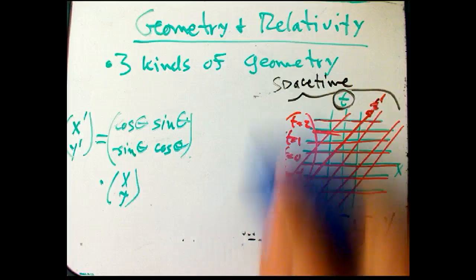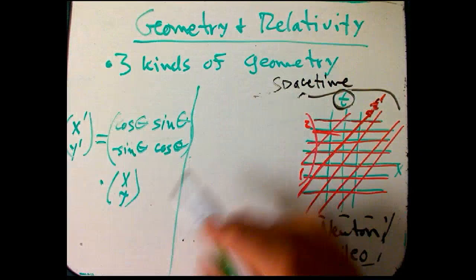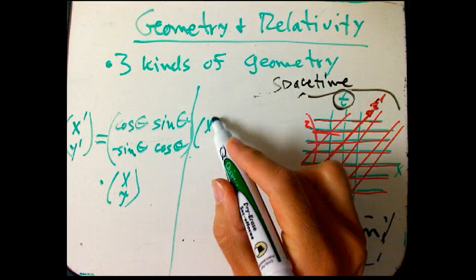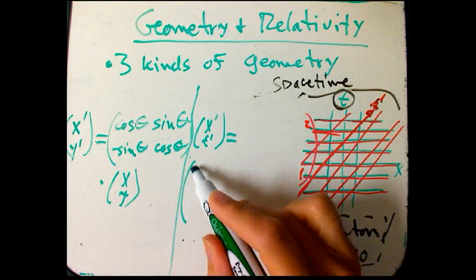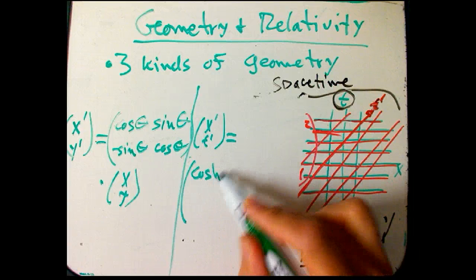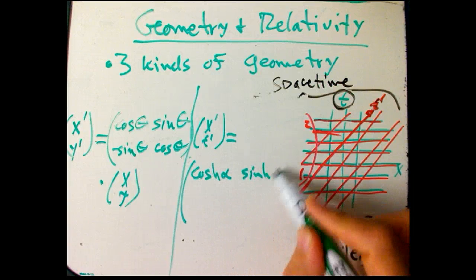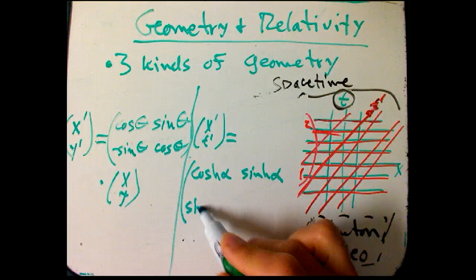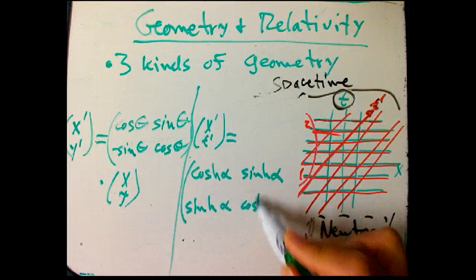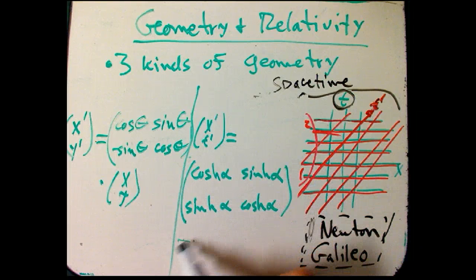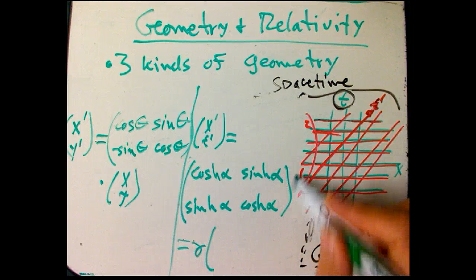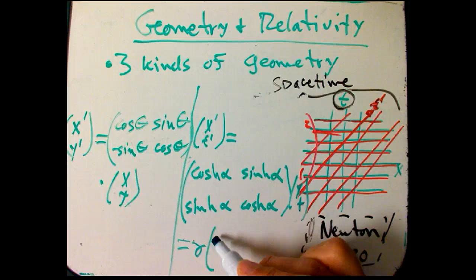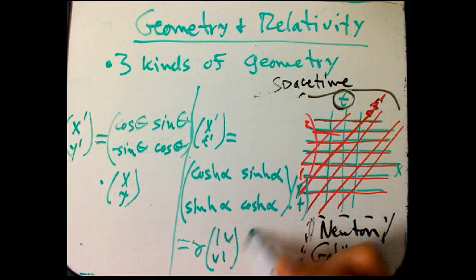In the Minkowski case, we had x prime, t prime. We had a couple ways of expressing it. The way I like to do it is with the alphas. But we can also do it as gamma times x, t, or gamma 1vv1 times x, t.